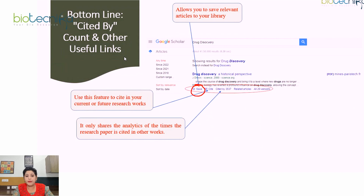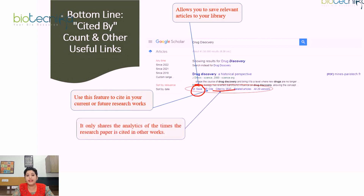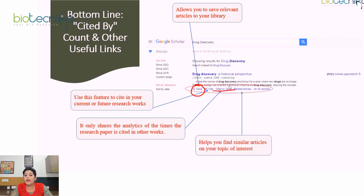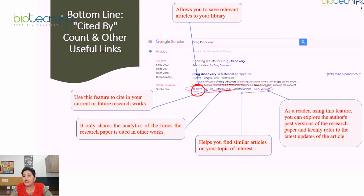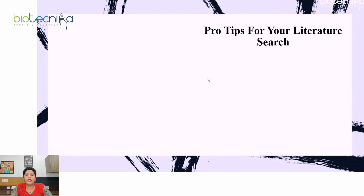There are more useful links on the results page. 'Cited by 3,537' provides analytics showing how many times the research paper has been cited. 'Related articles' helps you find similar articles on your topic of interest. 'Versions' allows you to explore the author's past versions of the research paper and refer to the latest updates. Note that Google Scholar limits each search to a maximum of 1,000 results, which is still a lot to explore.